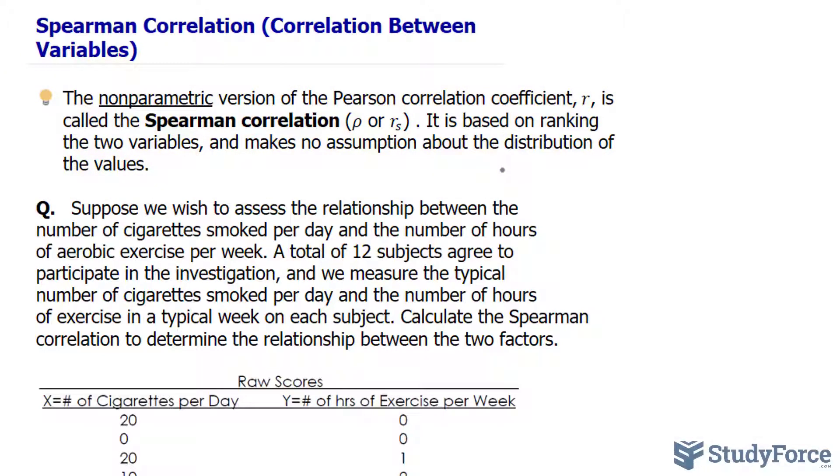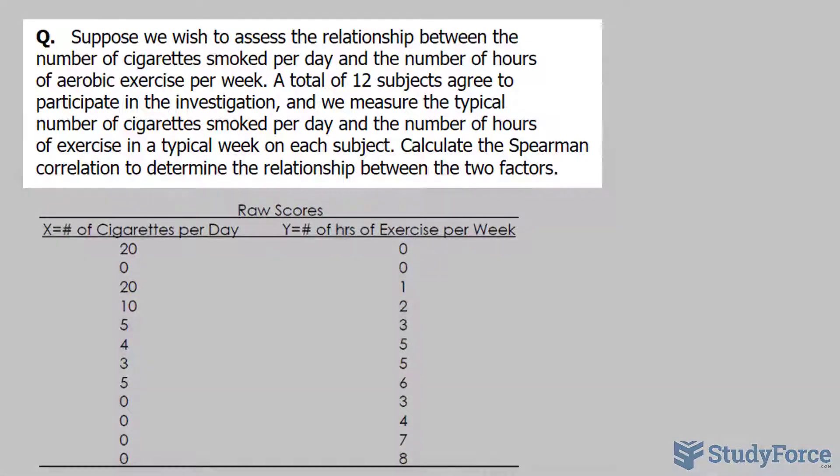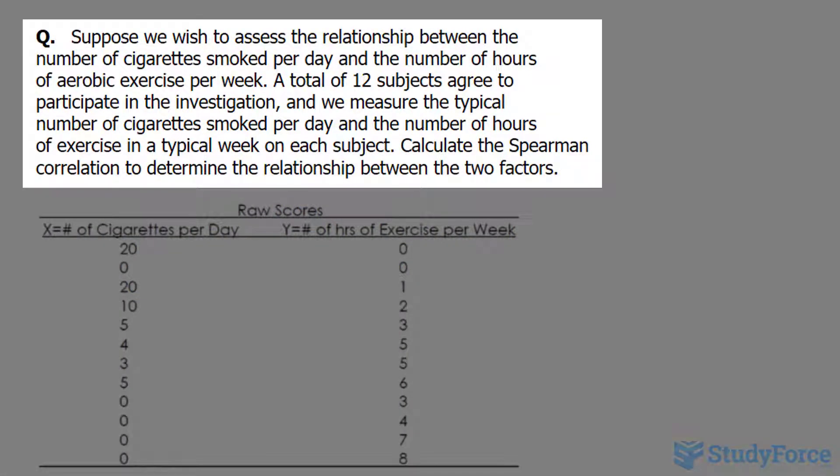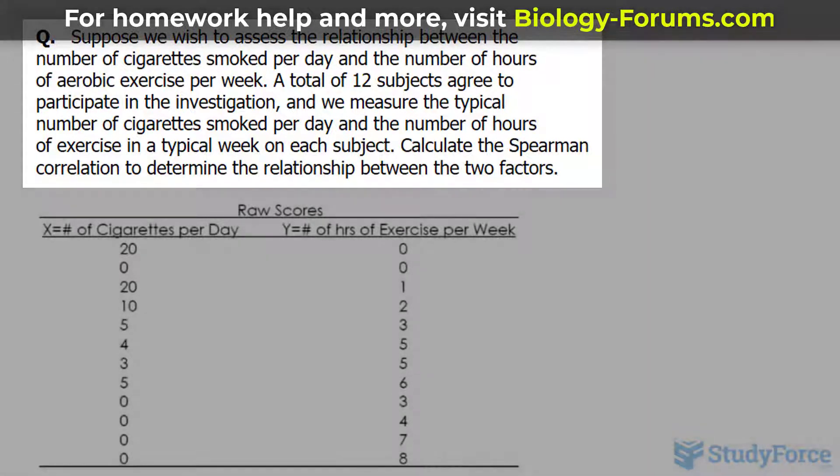That being said, the question reads, suppose we wish to assess the relationship between the number of cigarettes smoked per day and the number of hours of aerobic exercise per week. A total of 12 subjects agreed to participate in the investigation and we measure the typical number of cigarettes smoked per day and the number of hours of exercise in a typical week on each subject. Calculate the Spearman Correlation to determine the relationship between the two factors.